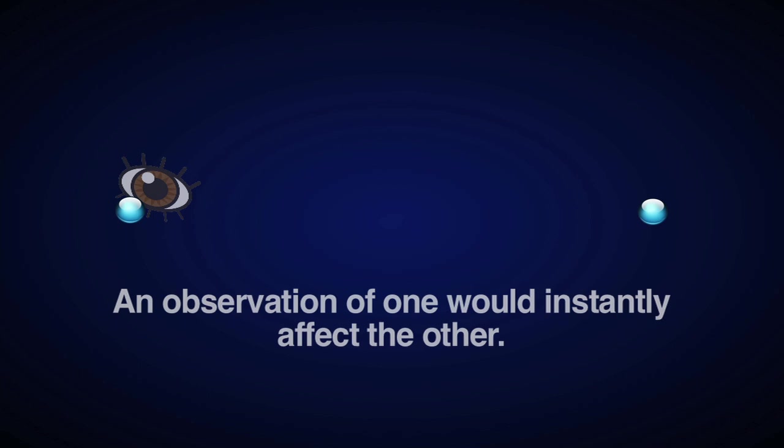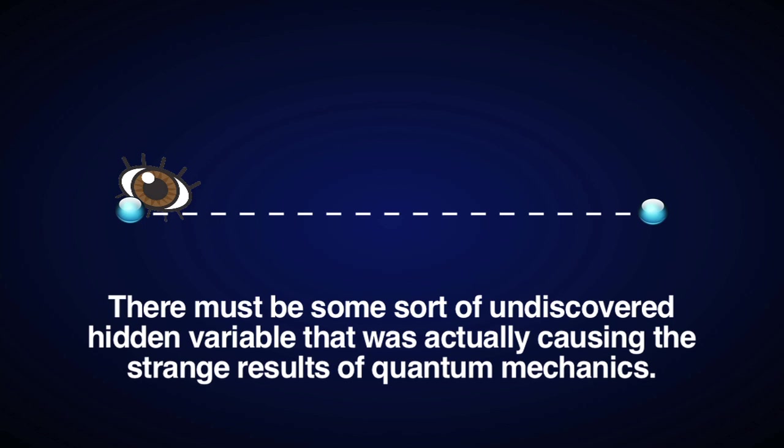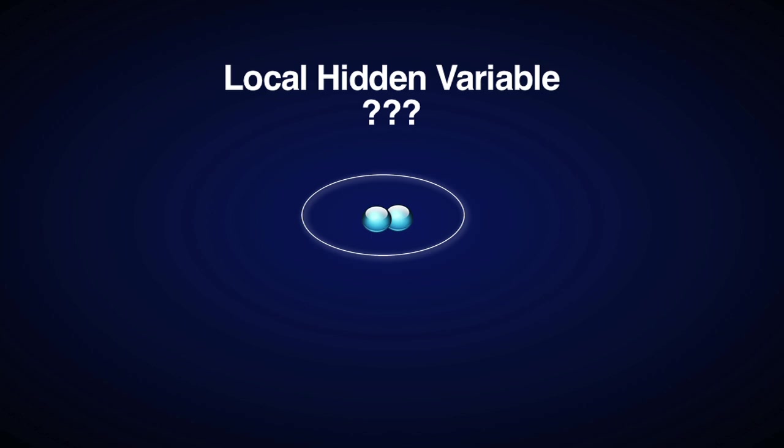So in 1935, Einstein and two of his colleagues came up with a thought experiment to debunk quantum mechanics. They proposed that if you placed two particles in a joint superposition, and then separated them with a great distance, an observation of one would instantly affect the other, which Einstein called a spooky action at a distance. The point was that information between the two could not travel faster than the speed of light, so there must be some sort of undiscovered hidden variable that was actually causing the strange results of quantum mechanics, and not observation itself. That matter acted independent of observation and only appeared to be observation dependent from our perspective.